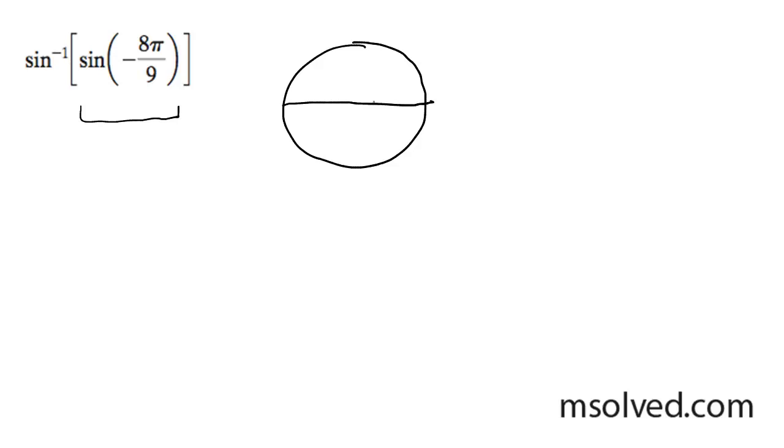So negative pi over 8 is going to be right about, this is split up into ninths, this half down here. So this is negative pi over 8.